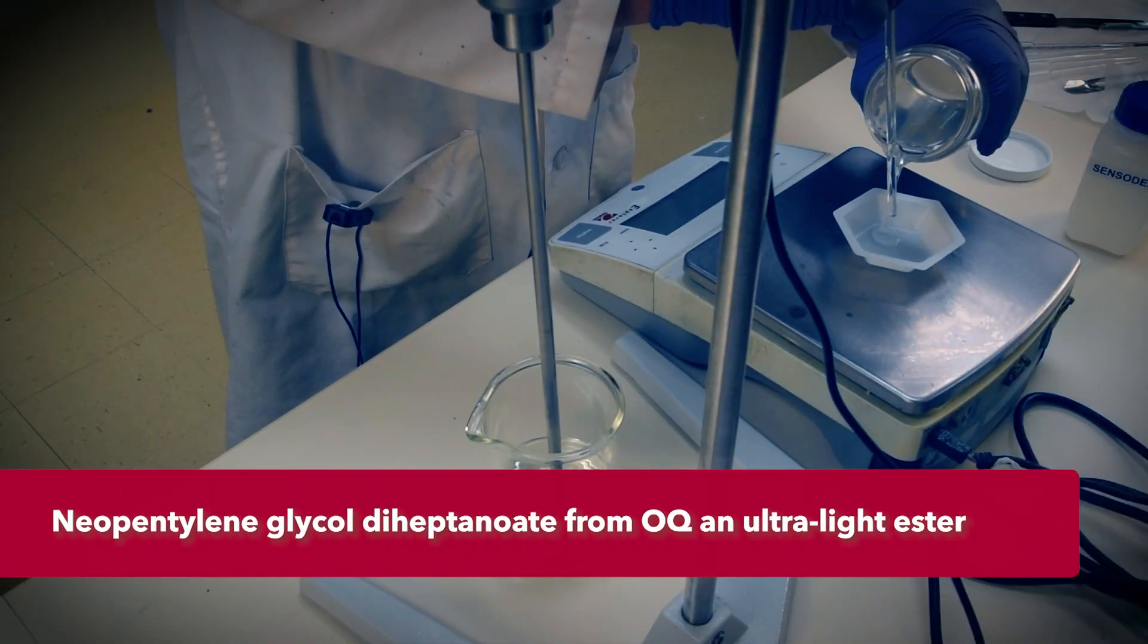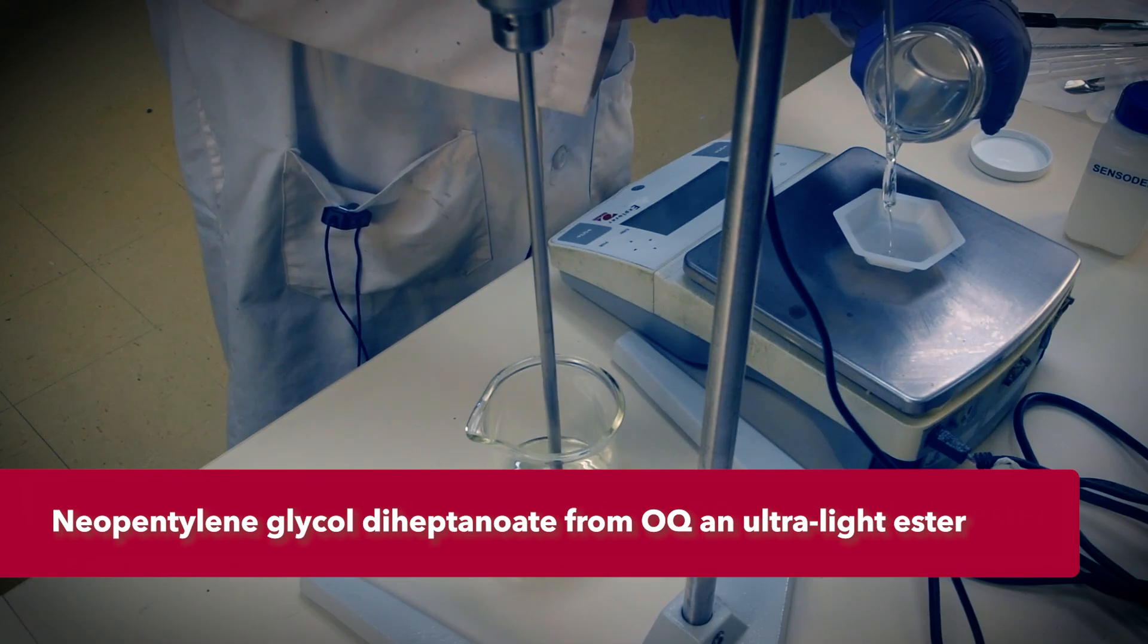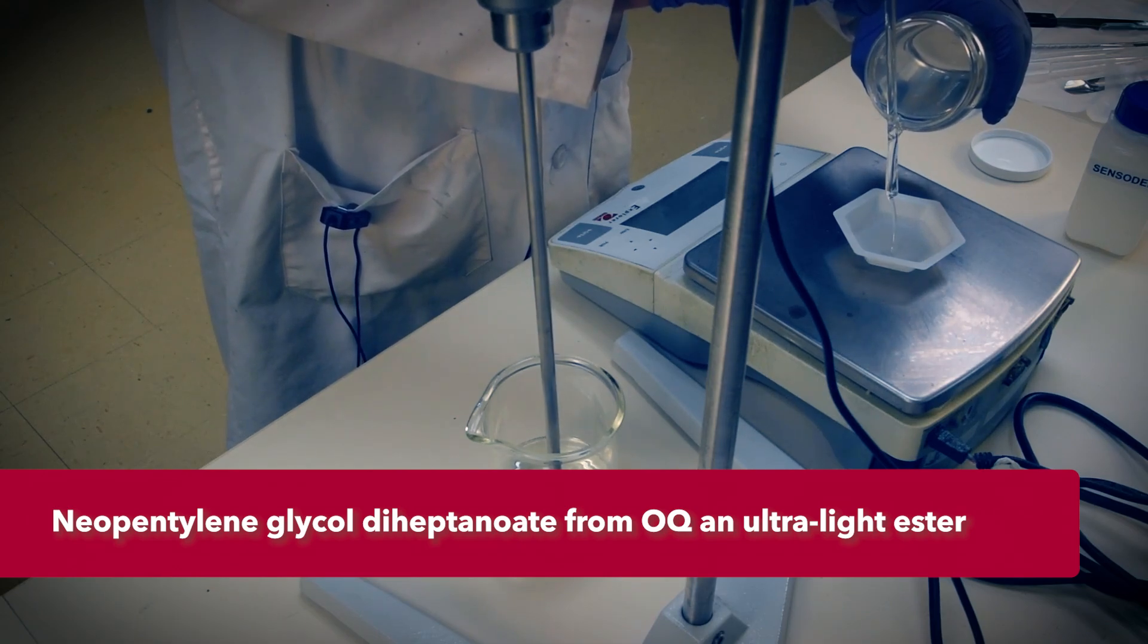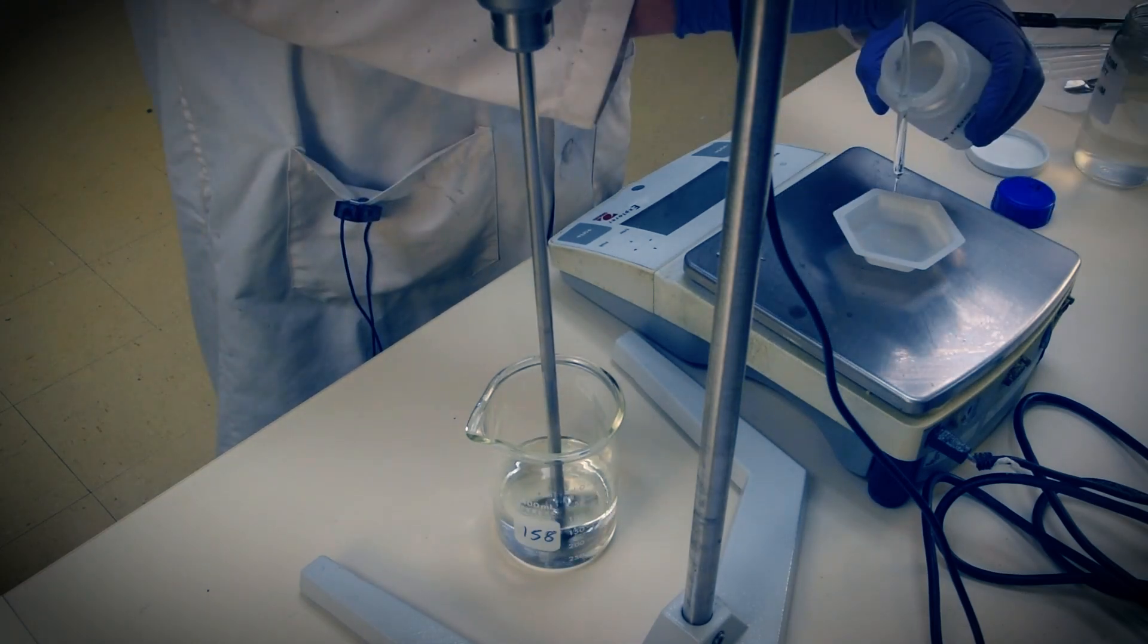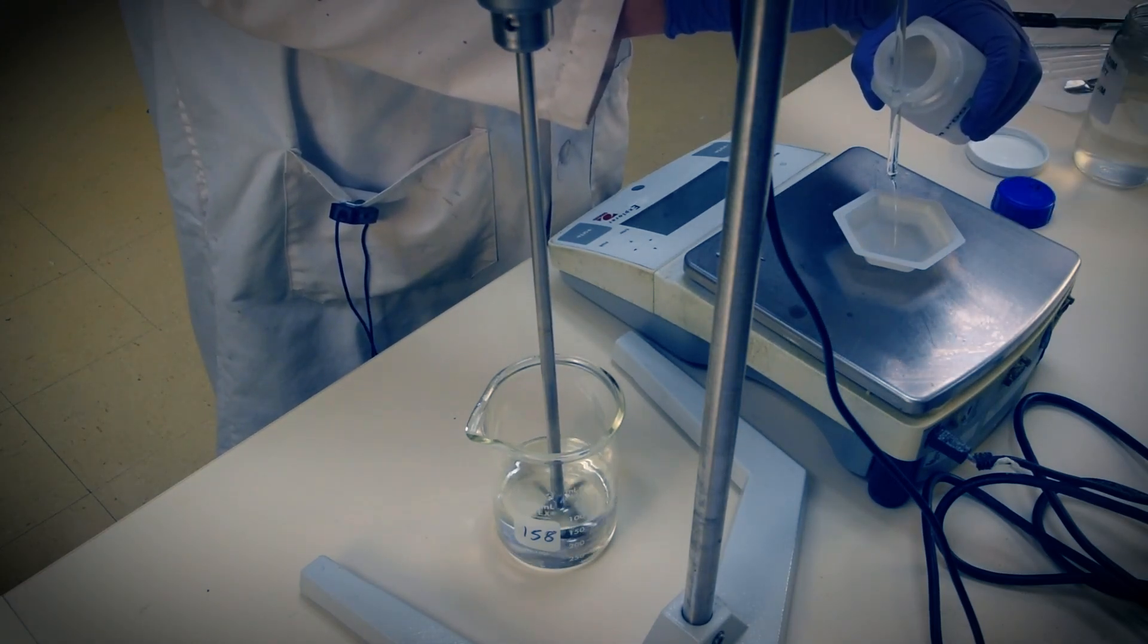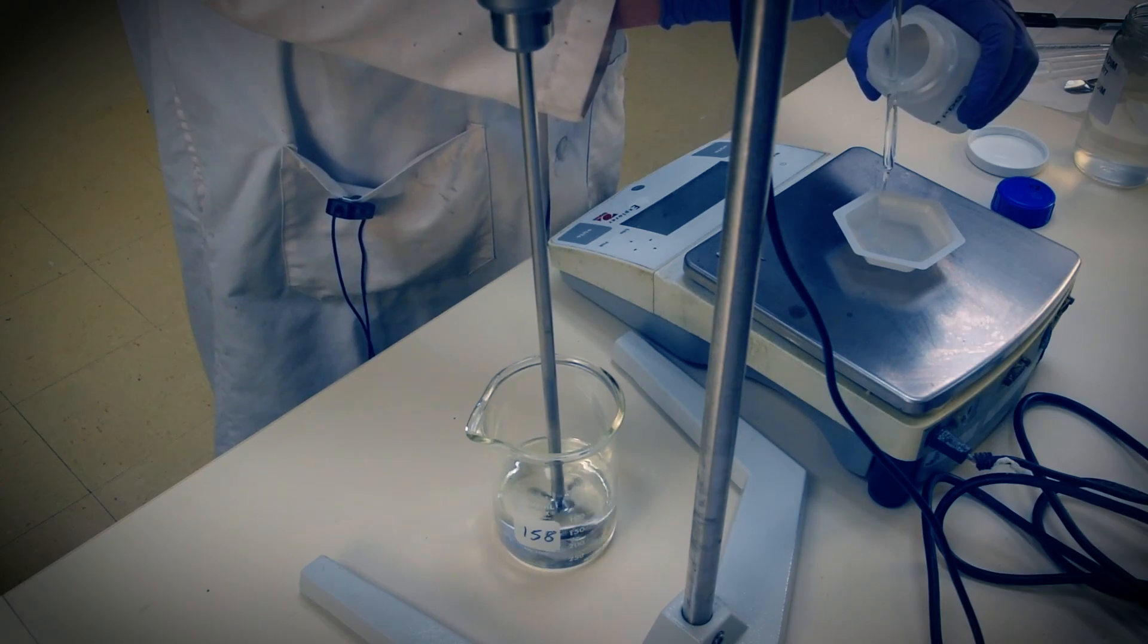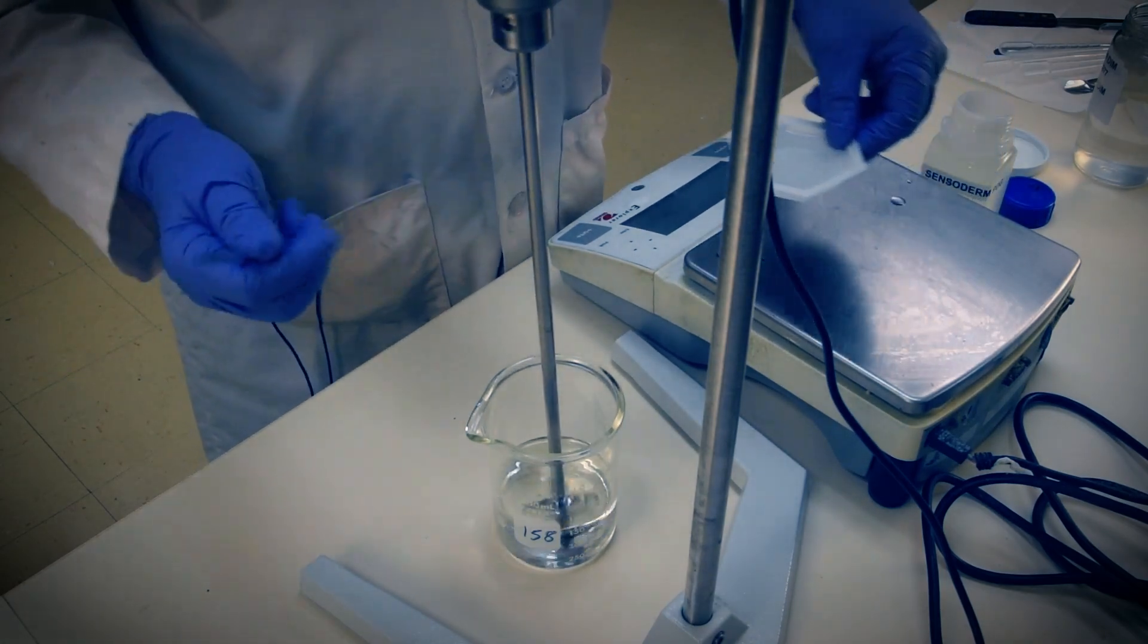We're starting this system with a light oil base beginning with neopenthalene glycol diheptanoate from OQ chemicals. This ultralight ester comes close to capturing the sensorial effect of the cyclomethicone and ultralight mineral oil we so often used in these hair sheens before. However, esters such as these don't add the occlusive effect the petroleum and silicone vehicles did, and they wash off the hair so much easier, avoiding build up.